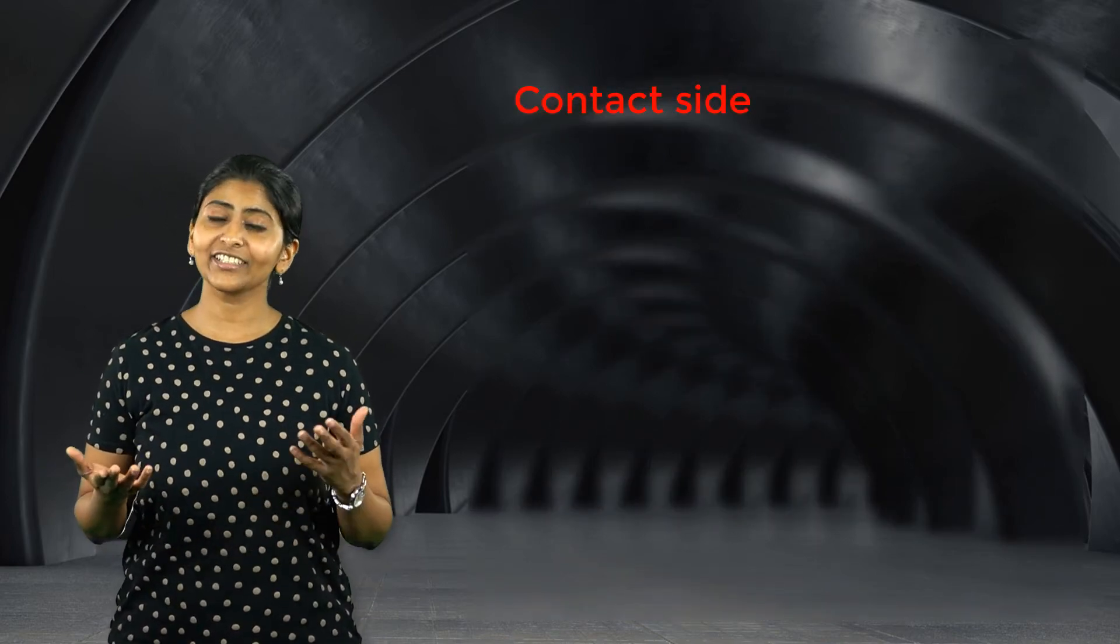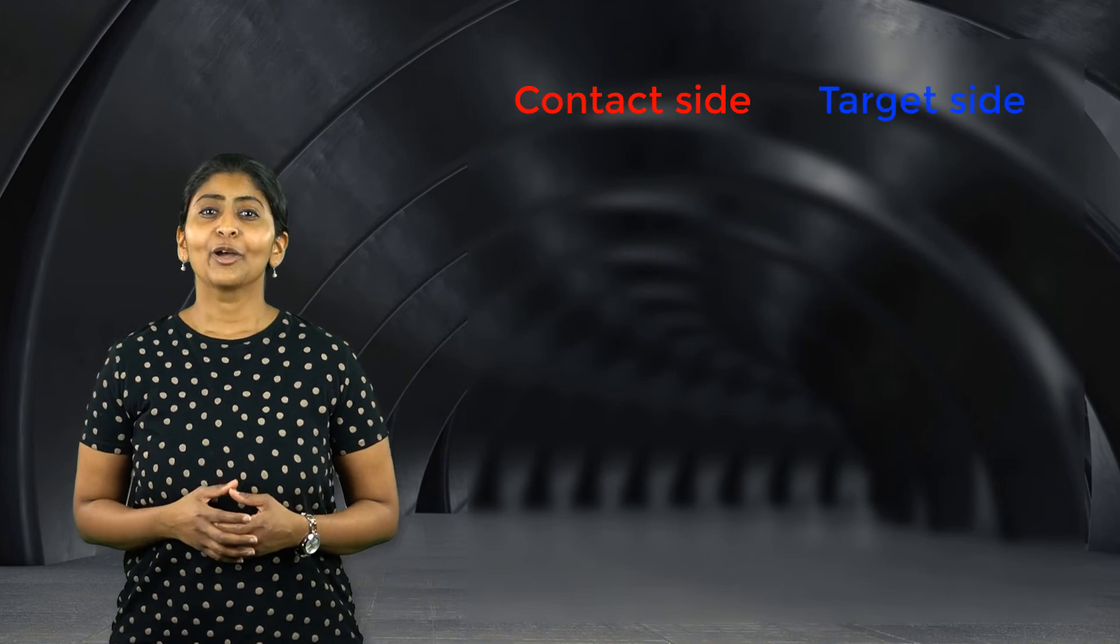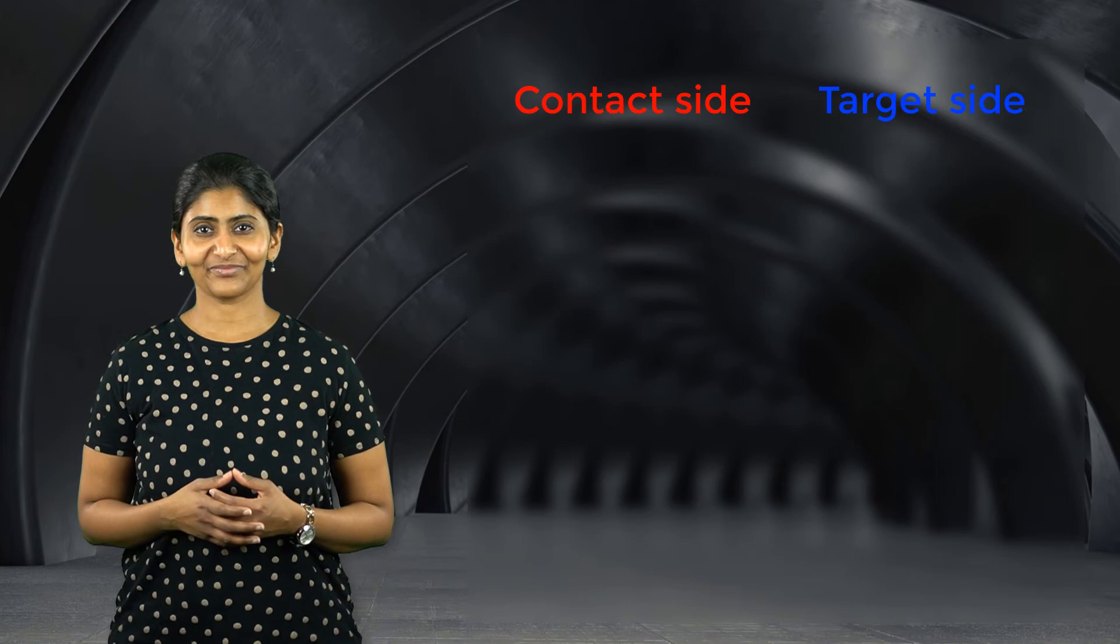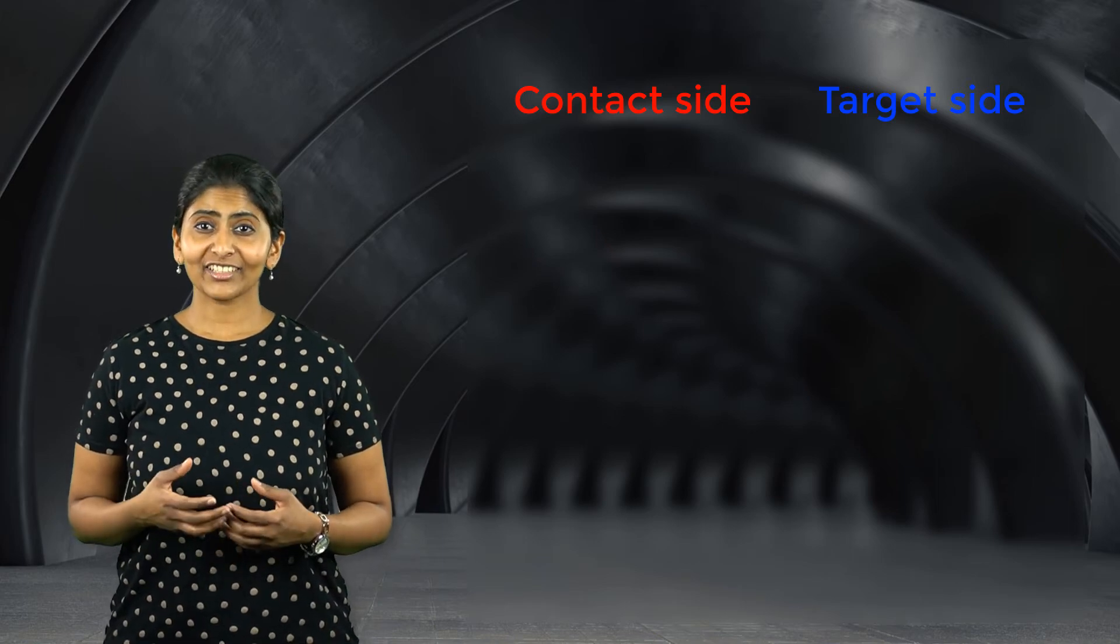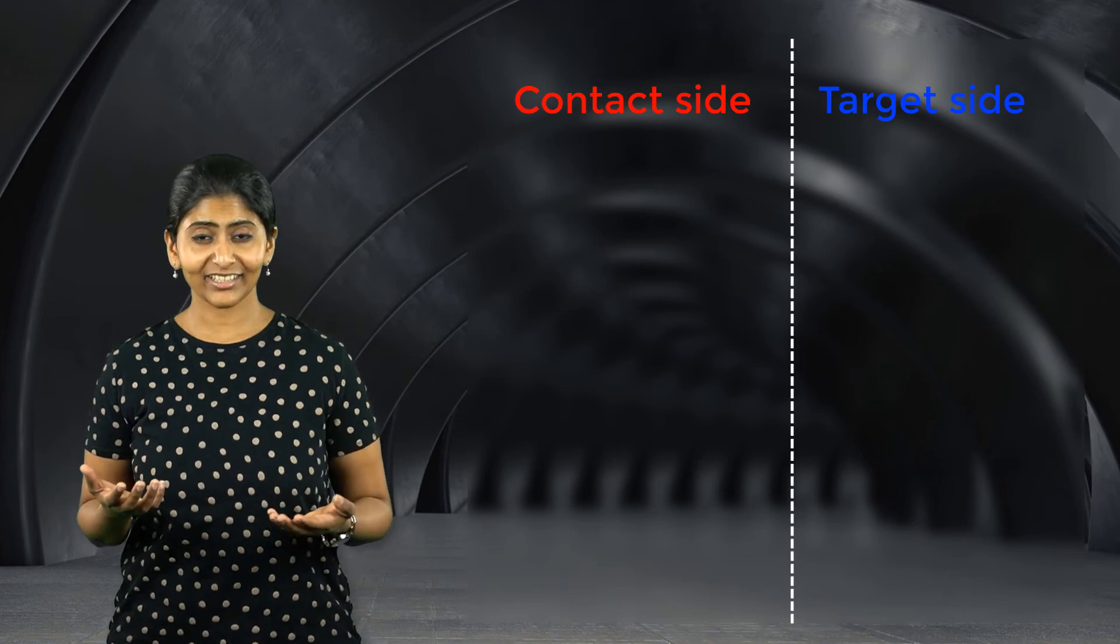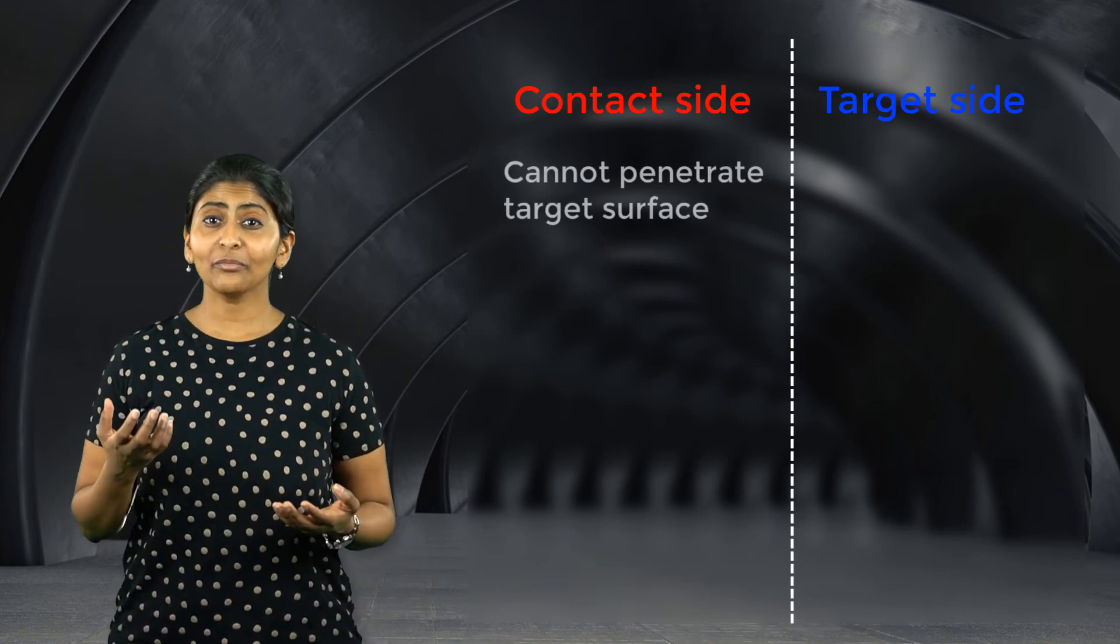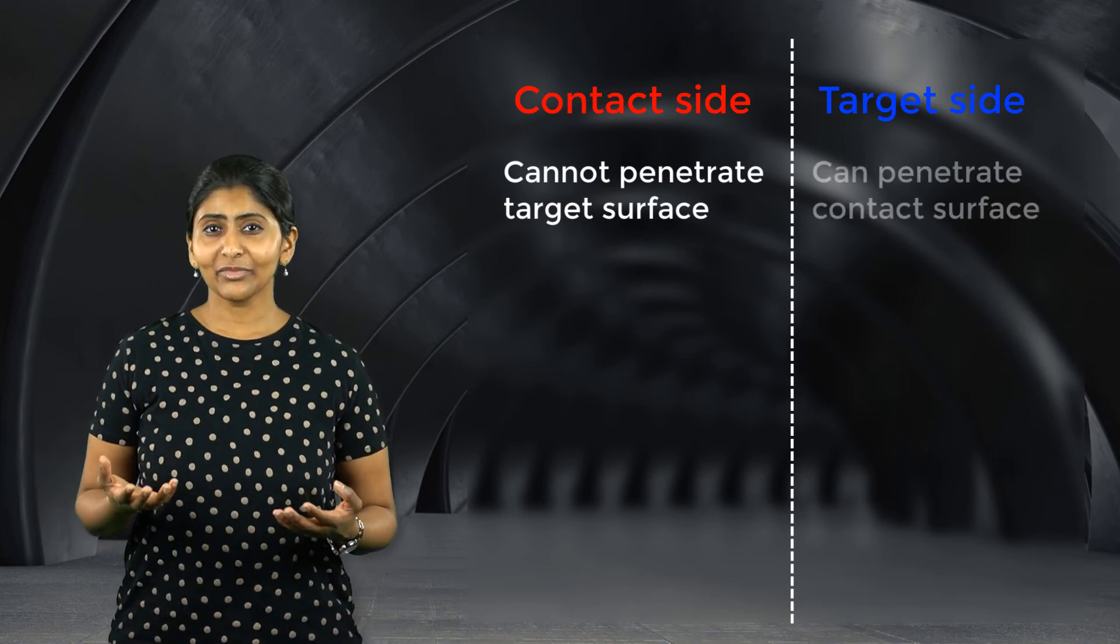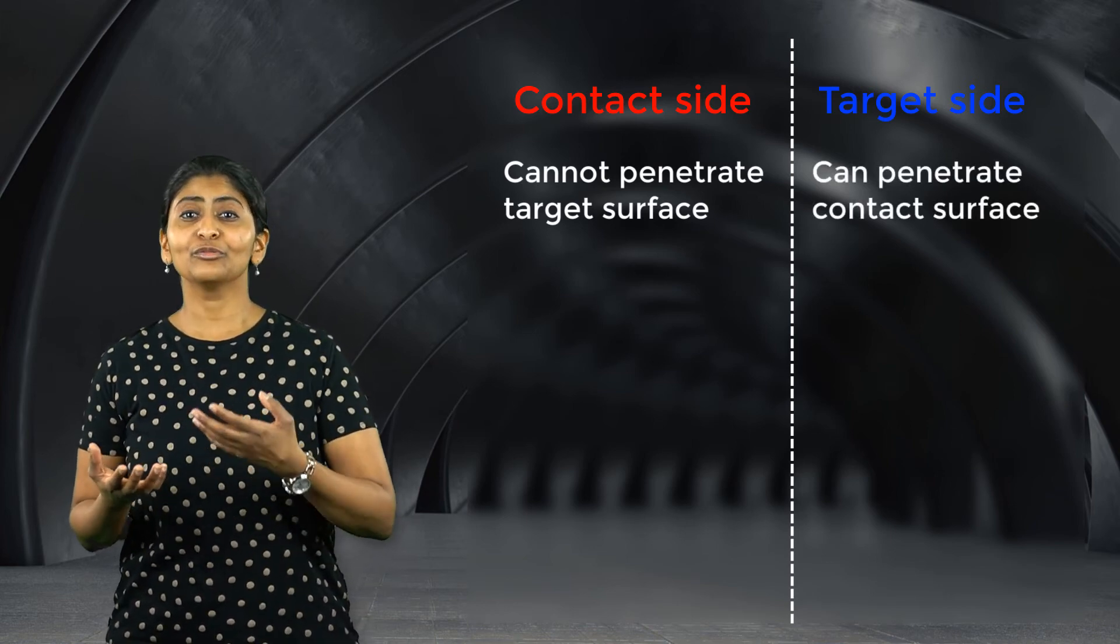When defining contact between two bodies or surfaces in ANSYS Mechanical, we need to define the contact side and the target side. We have seen this in the workshops for the previous two sections. The main factor distinguishing the contact and the target sides is that contact elements cannot penetrate the target surface, but target elements can penetrate through the contact side.